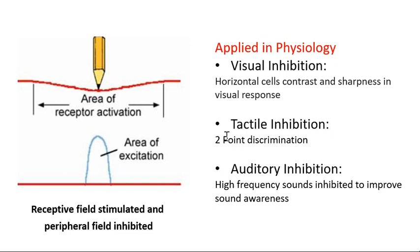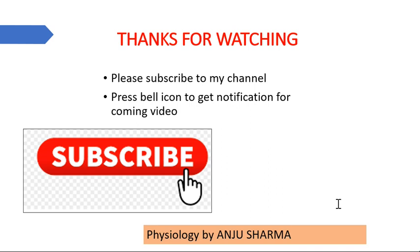In tactile inhibition, two-point discrimination is explained: because of lateral inhibition, the receptive field area is demarcated precisely and we can perceive it in the cerebral cortex. In auditory inhibition, high-frequency sounds are inhibited so that we can more clearly increase awareness toward sound quality — if all frequency sounds were mixed, we couldn't hear properly, but by inhibiting high-frequency sounds, sound awareness improves. That's what lateral inhibition is and its uses in physiology. Thanks for watching.